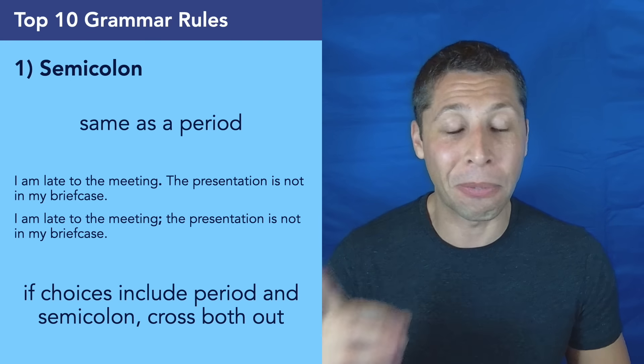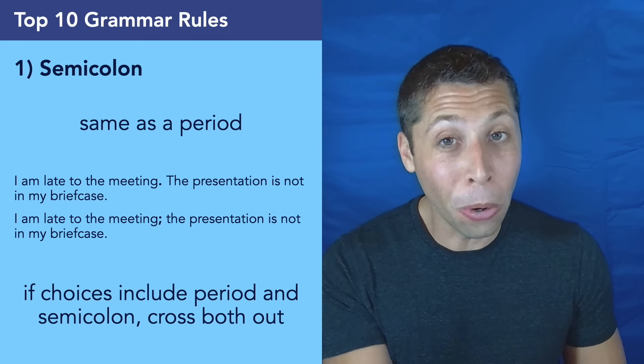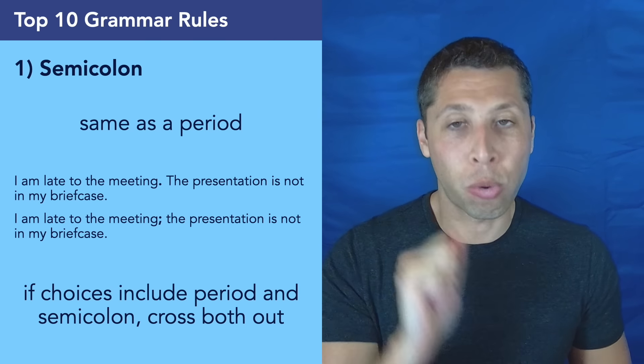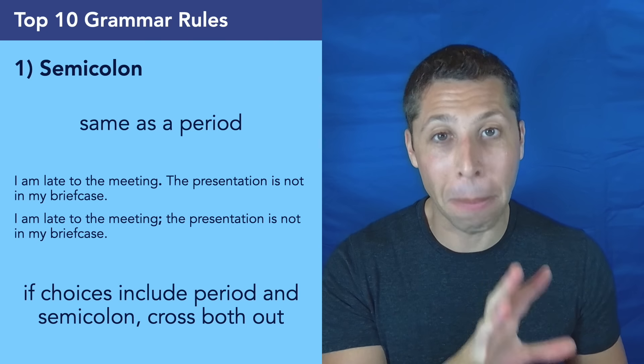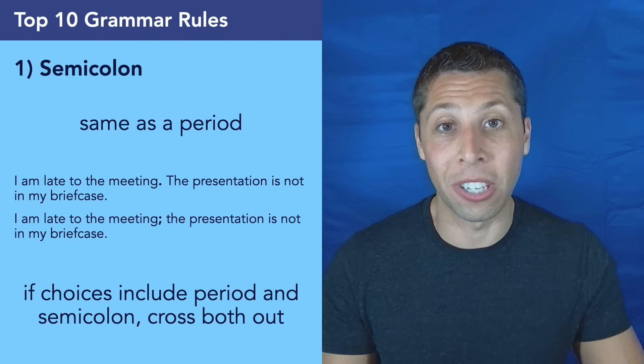So if there's one thing to remember from this video, it's this. If you see a semicolon and a period in answer choices and the wording of the choices is the same, cross out both the answer choices. It is probably the case that both are wrong. And now you can think about whatever else is going on in the sentence without that stuff confusing you.